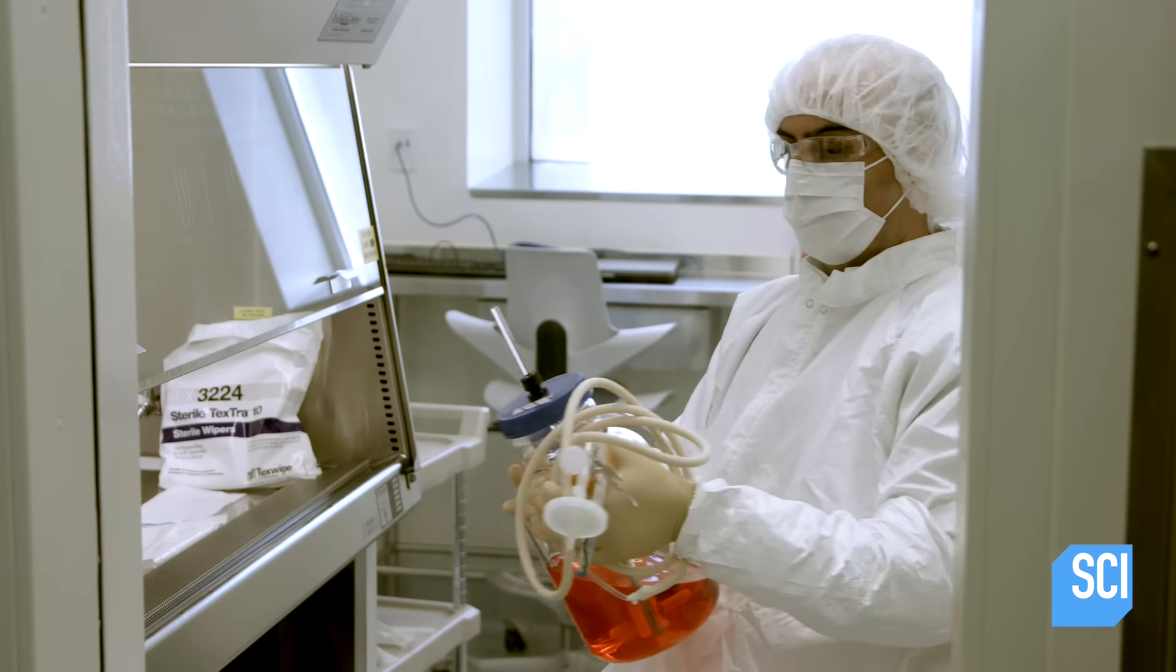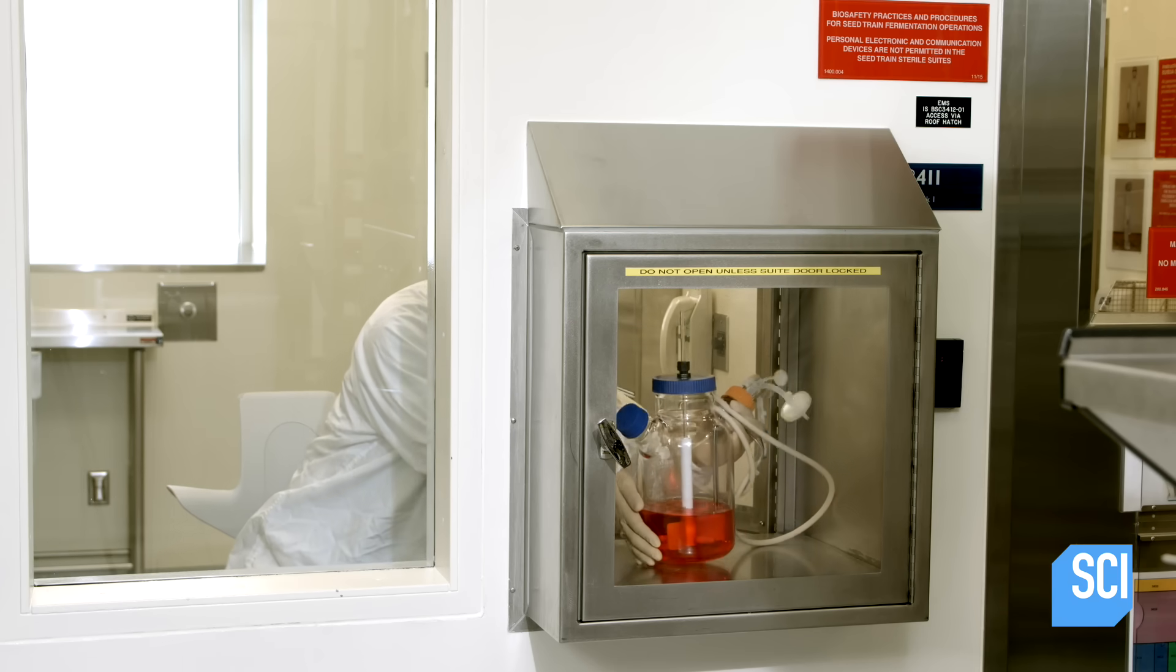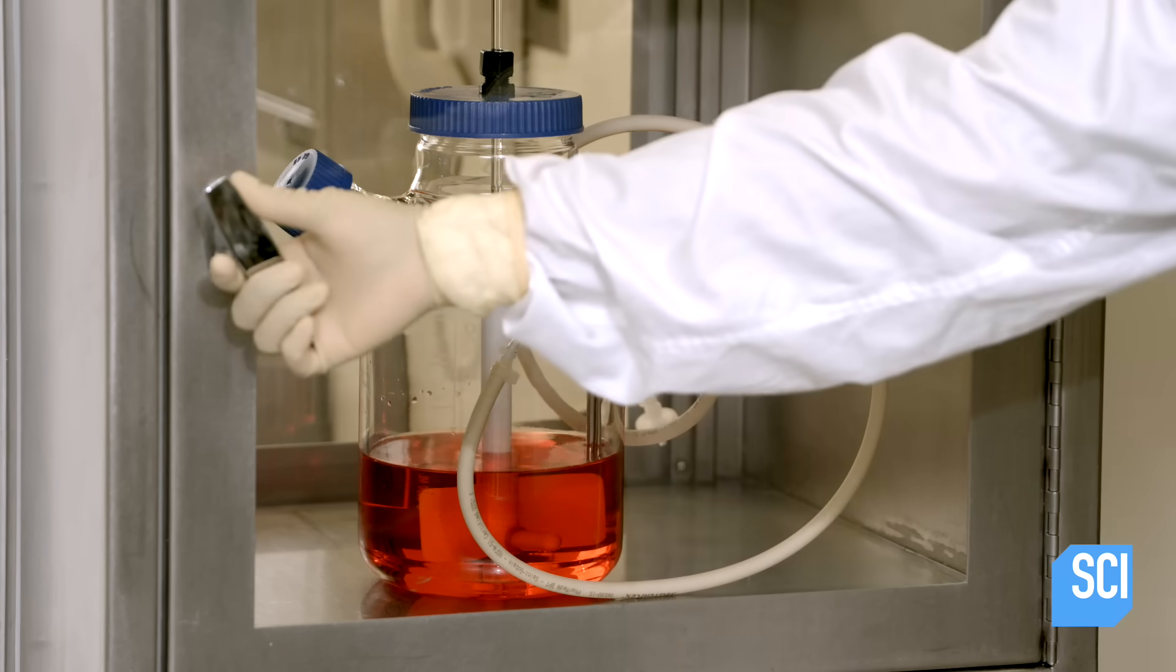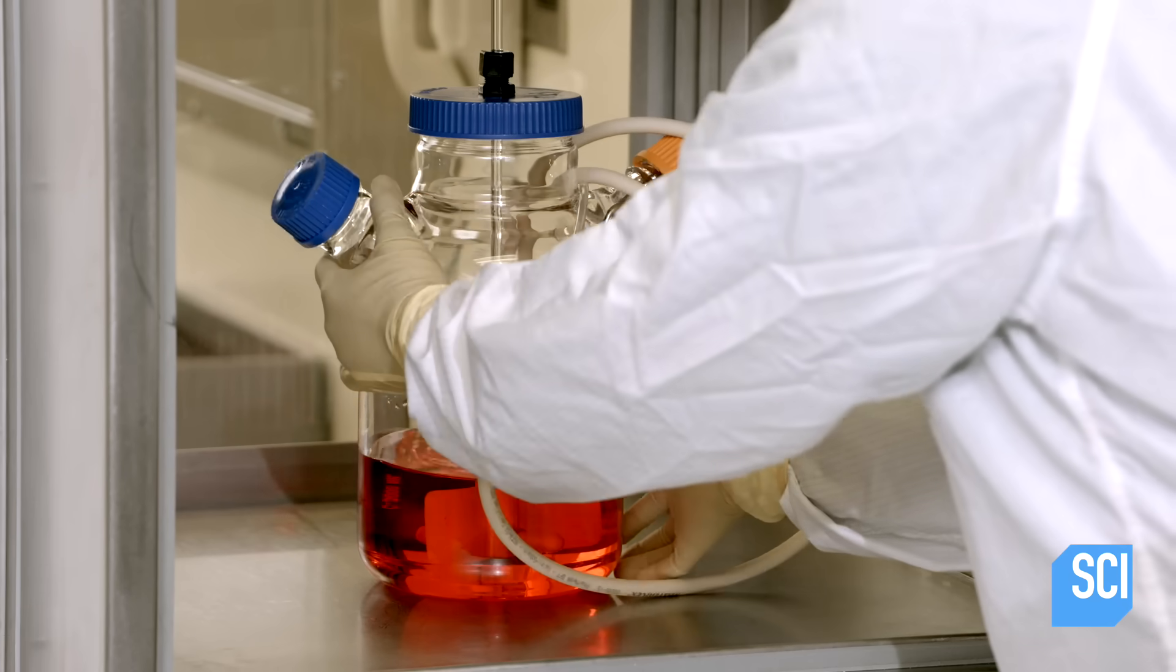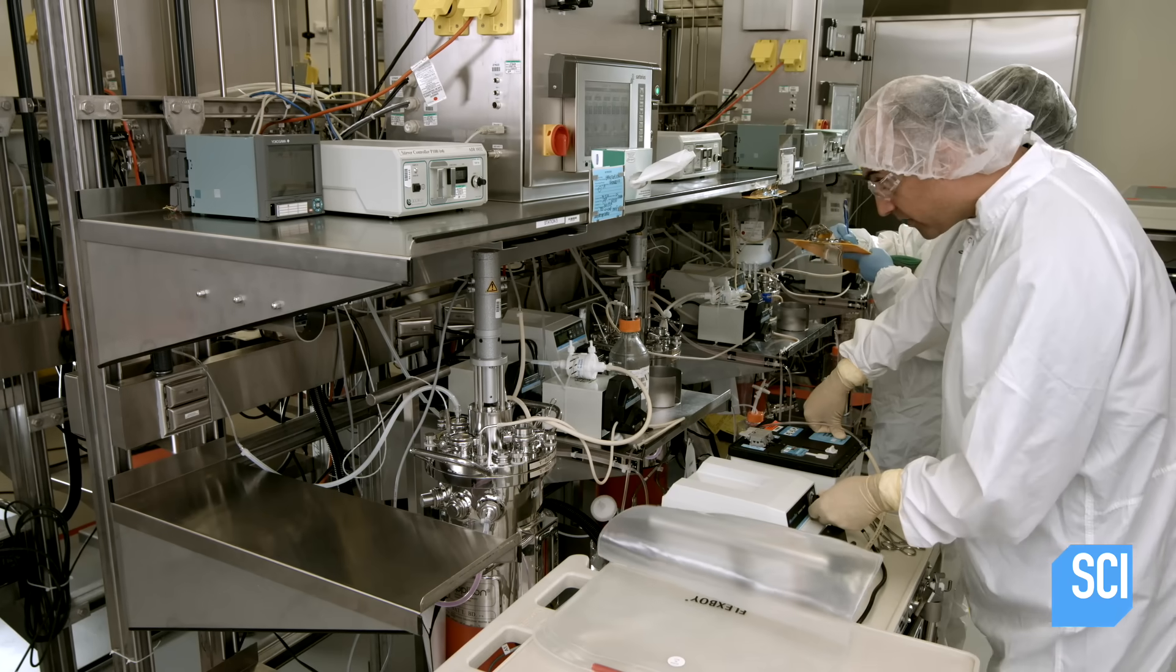It's a recipe to help the cells multiply. A worker transfers the flask that contains the cells to the production side of the plant. The team injects the mixture into a five-gallon capacity bioreactor.